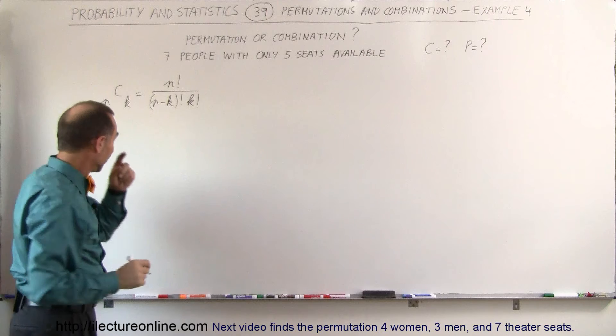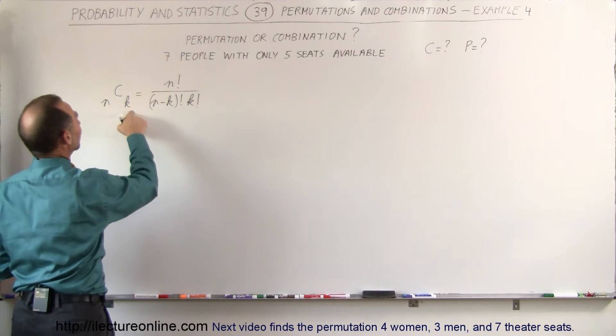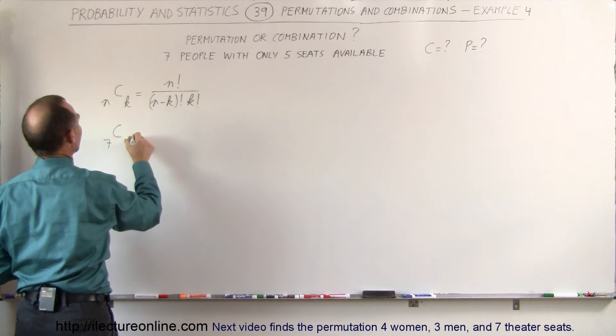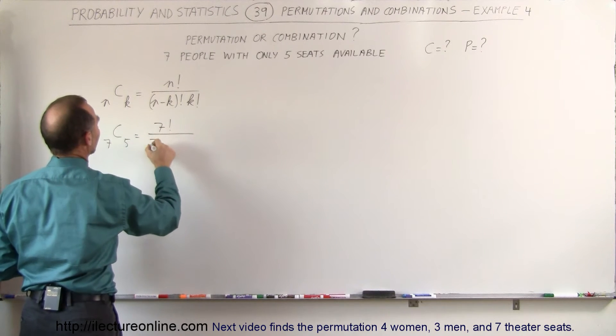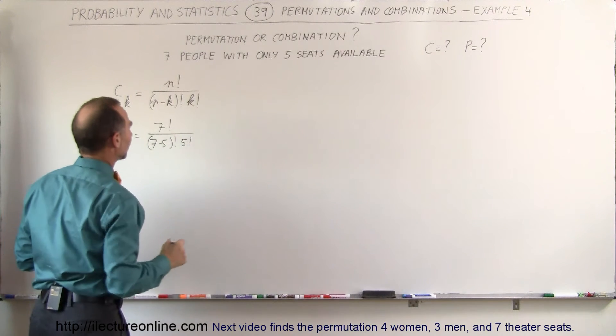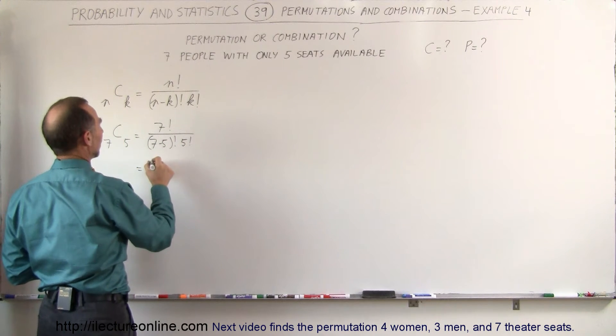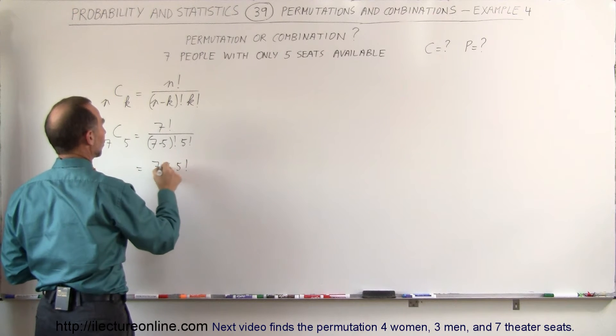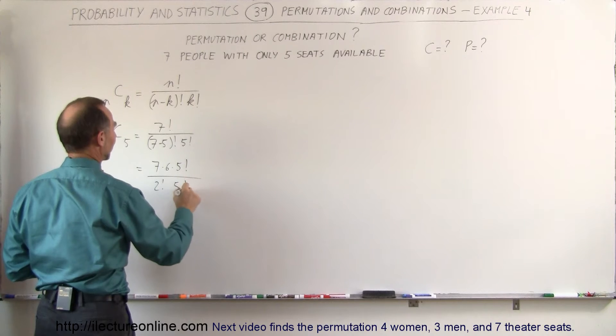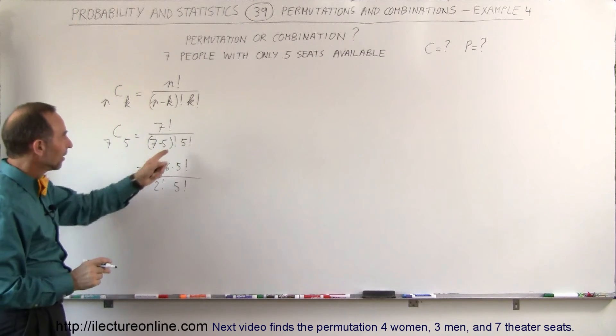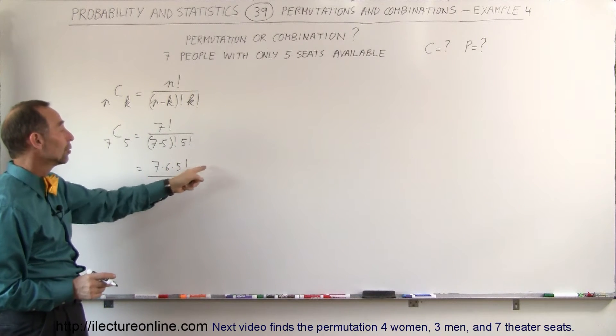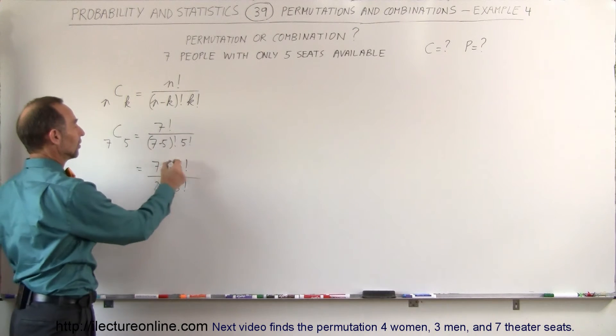In our example here we know that n is seven and k is five, so the combinations when we have seven people with five seats is equal to seven factorial divided by seven minus five factorial times five factorial. This becomes equal to seven times six times five factorial divided by two factorial times five factorial. Notice that this five factorial will cancel out the bottom five numbers in the multiplication, so five four three two one multiply together, so this cancels out.